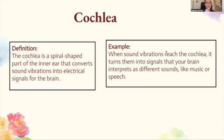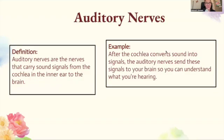The cochlea is a spiral-shaped part of the inner ear that converts sound vibrations into electrical signals for the brain. When sound vibrations reach the cochlea, it turns them into signals that your brain interprets as different sounds, like music or speech. The auditory nerves carry these sound signals from the cochlea in the inner ear to the brain, so you can understand what you're hearing.